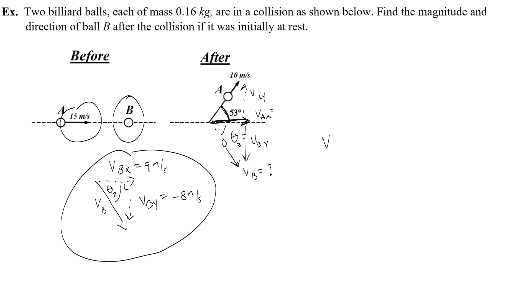To figure out what vb is, I would use the Pythagorean theorem and the square root of vbx squared plus vby squared. So 9 meters per second, the whole thing squared plus negative 8, that negative is going to get squared. So this will give me 12.04, so we'll call that 12 meters per second. So that's the magnitude.